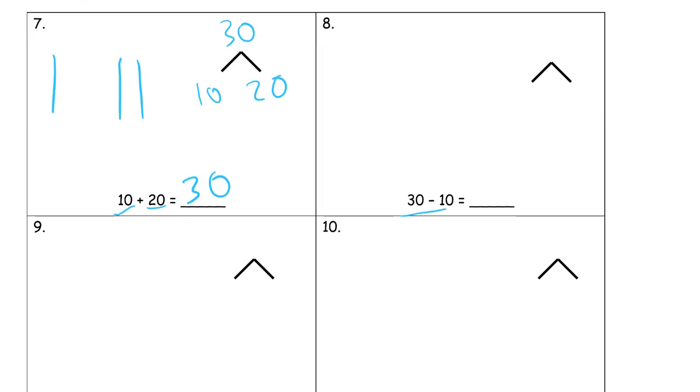All right. So now we're looking at 30 minus 10. So starting with 30, 10, 20, 30, we're going to subtract 10. So we could cross out one of these tens. And then, what are we going to have left? The two tens here, which is 20. Two tens is 20. So our whole is 30. And our parts are 10 and 20.